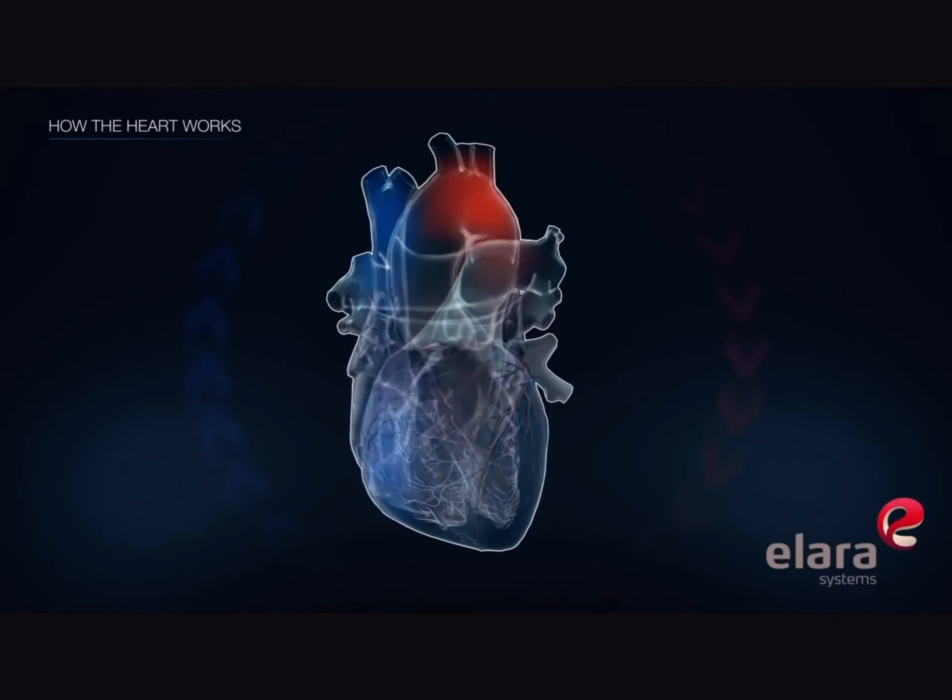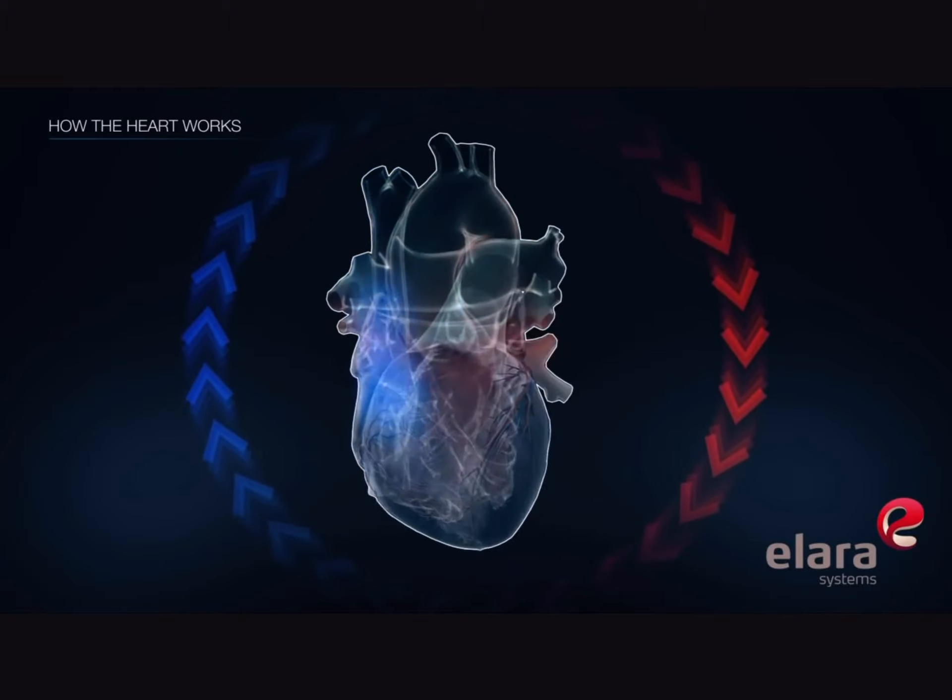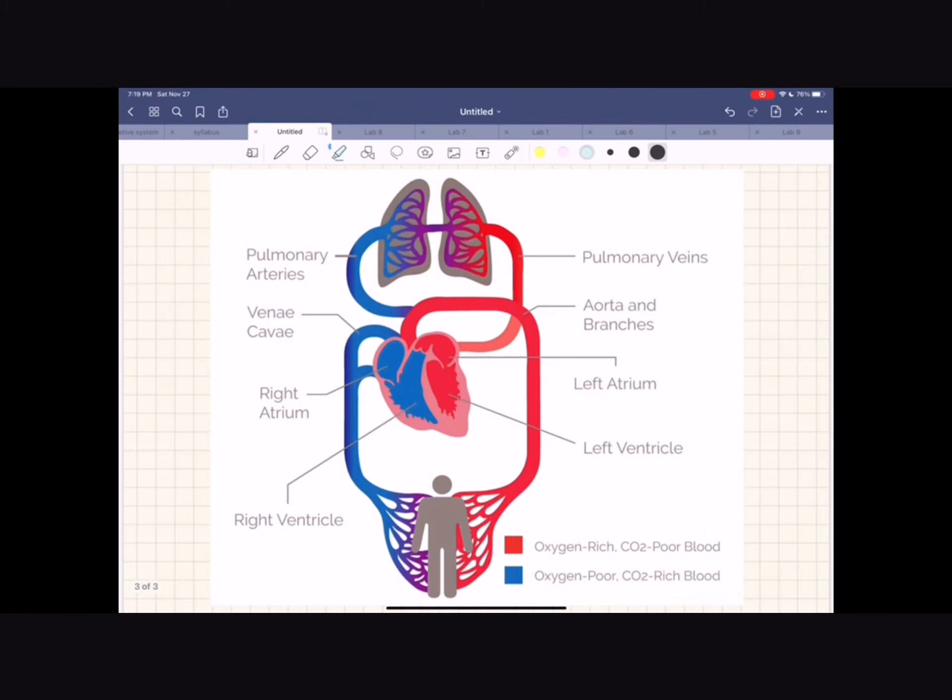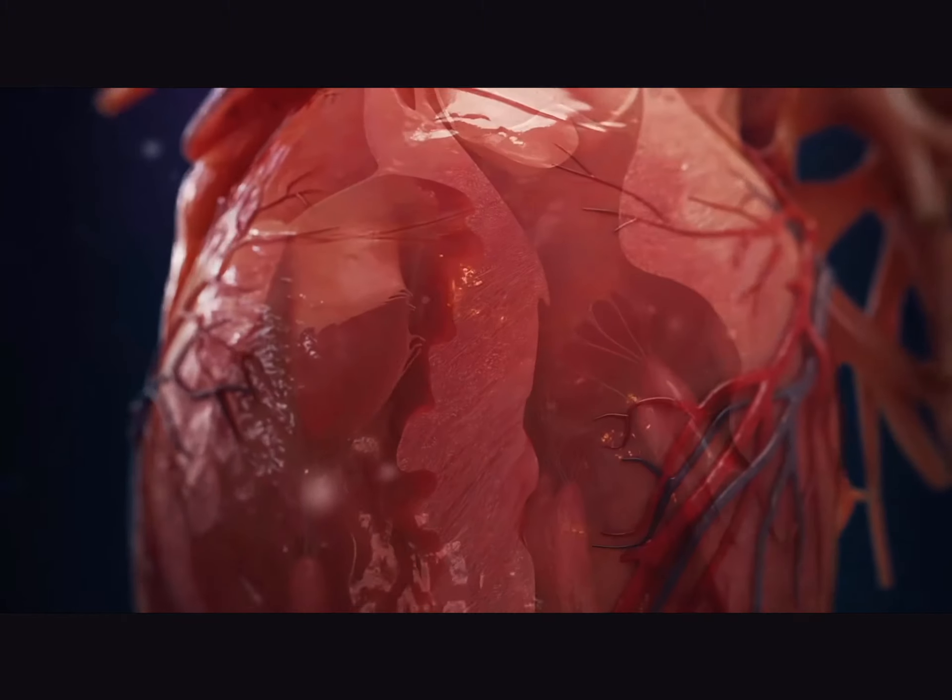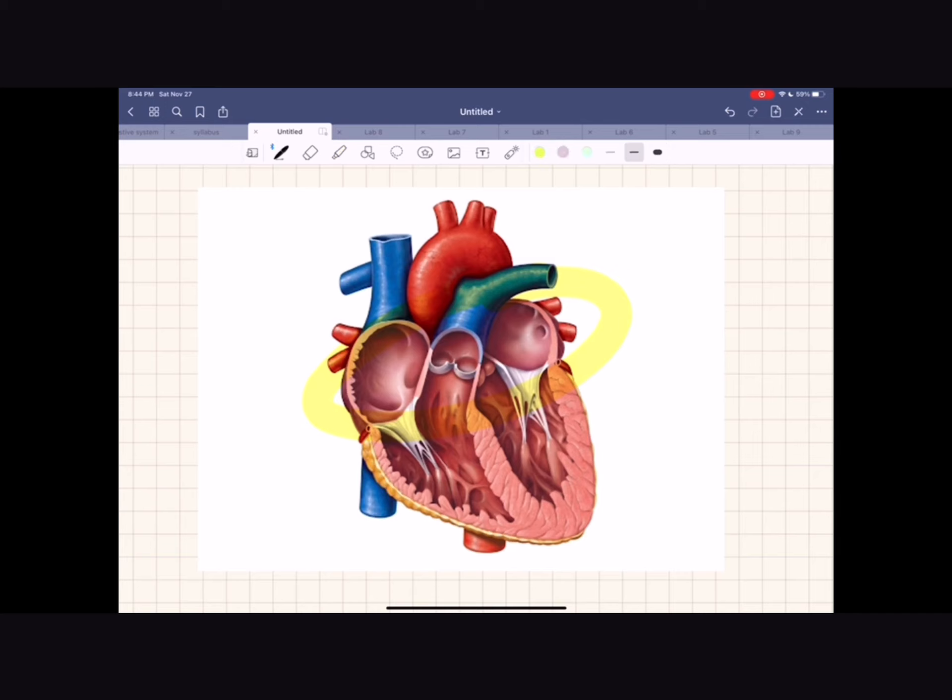The human heart functions as a pump to transport blood throughout the body. Specifically, the heart transports blood between two systems, systemic circulation and pulmonary circulation. To achieve this, the heart has four chambers. The top two chambers are called atria, and the bottom two chambers are called ventricles.